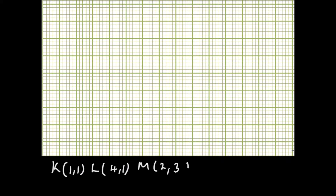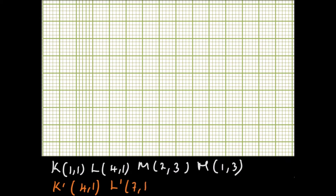For the object: K is (1,1), L is (4,1), M is (2,3), and N is (1,3). For the image: K' is (4,1), L' is (7,1), M' is (11,3), and N' is (10,3). With these coordinates, it will be easy to plot both the object and the image.